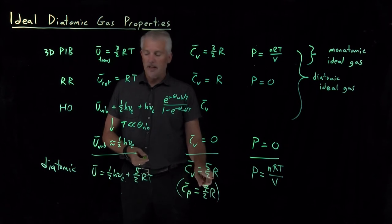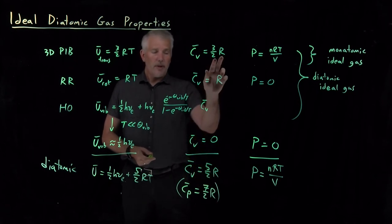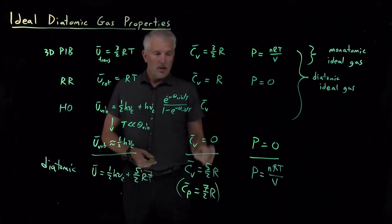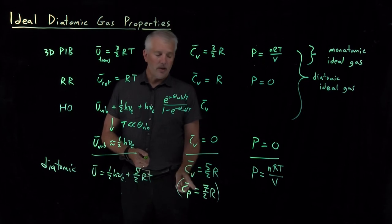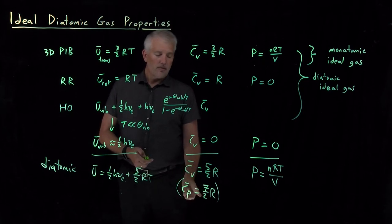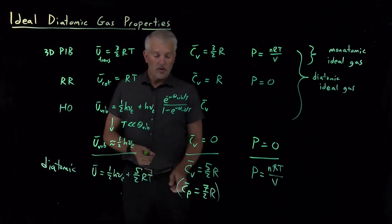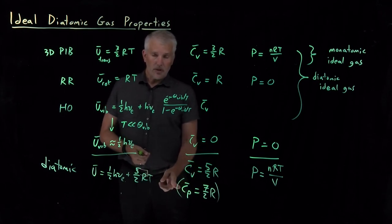The constant volume heat capacity of a diatomic molecule, three halves of that five halves R come from the translational motion. One of the five halves R's come from the rotational motion. None of it comes from the vibrational motion. And those sum up to five halves R for CV or one factor of R larger for CP. So that extra factor of R comes from the PV work associated with constant pressure processes rather than constant volume processes.